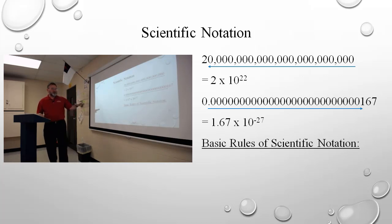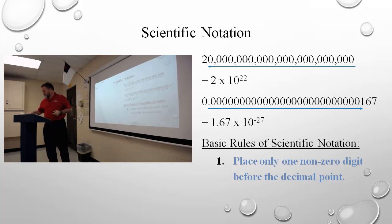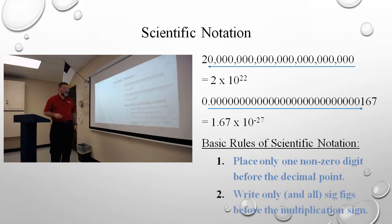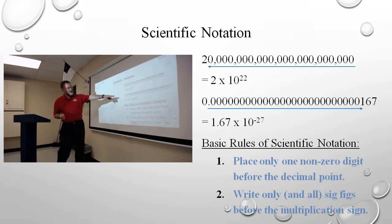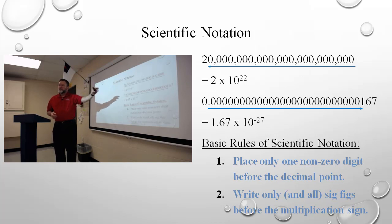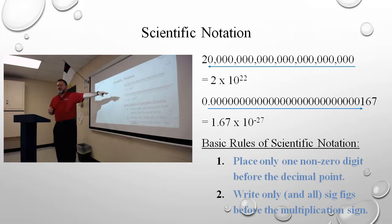The basic rules of scientific notation: you're going to put it in the form that places one non-zero digit to the left of the decimal place. Then write only and all the significant figures before the multiplication sign. So you'd have to go through, figure out which ones are significant, come to the conclusion that the last three — the one, six, and seven — are significant. That's three. I need to write those three numbers in my answer. That's why all leading zeros are insignificant: because you're not going to have them communicated into that answer.